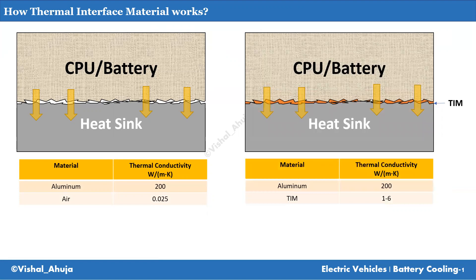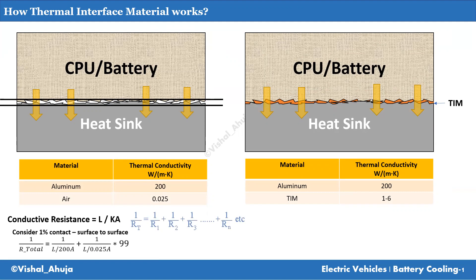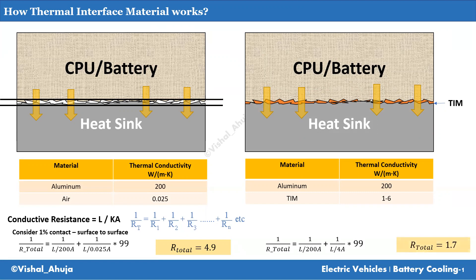The thermal conductivity for these TIM materials ranges from 0.5 to 0.66 W/m·K being maximum available in industrial applications. If you perform a small calculation considering 1% contact area, you find the total thermal resistance for that small area is around 4.9 K/W. Whereas with thermal interface material applied, this resistance comes down to 1.7 — a 66% reduction in heat transfer resistance, and the heat transfer increases by 3 times.